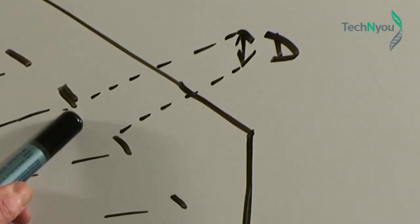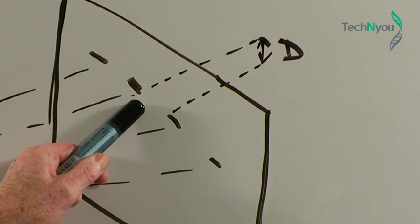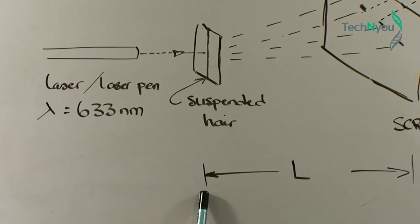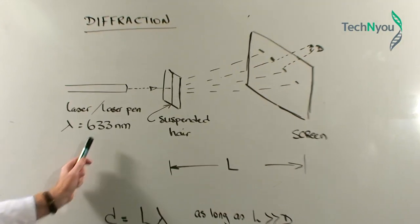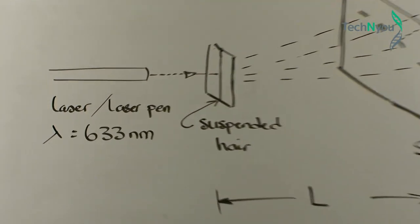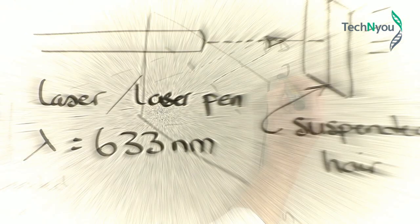D is the distance between two bright parts in the diffraction pattern. L is the distance from the hair to the screen. And lambda is the wavelength of the laser beam. All units must be converted to metres.